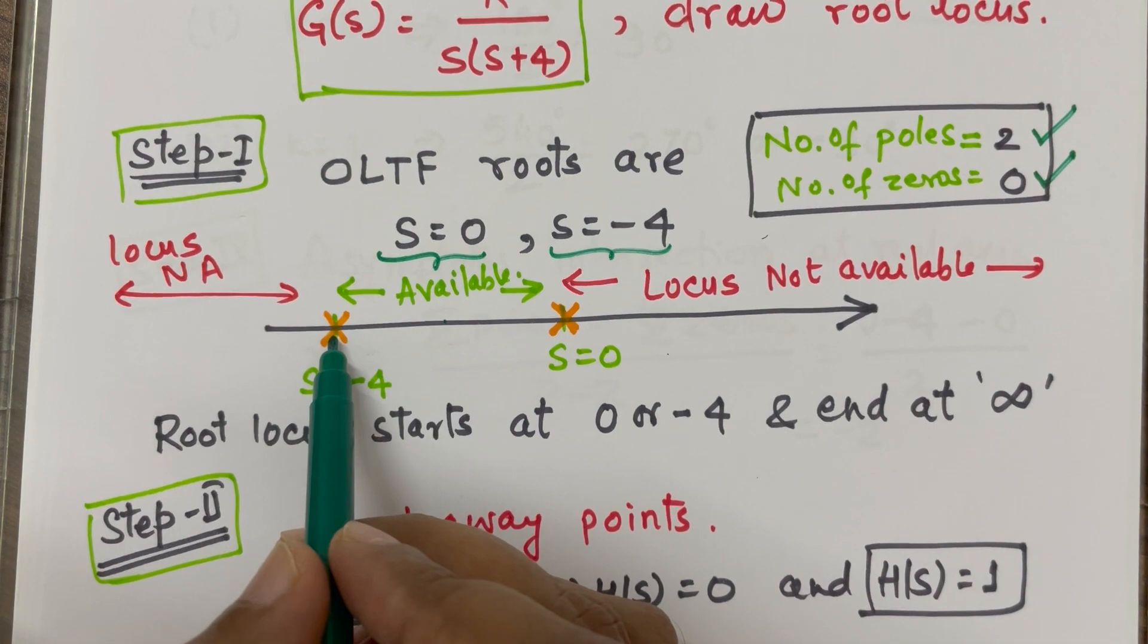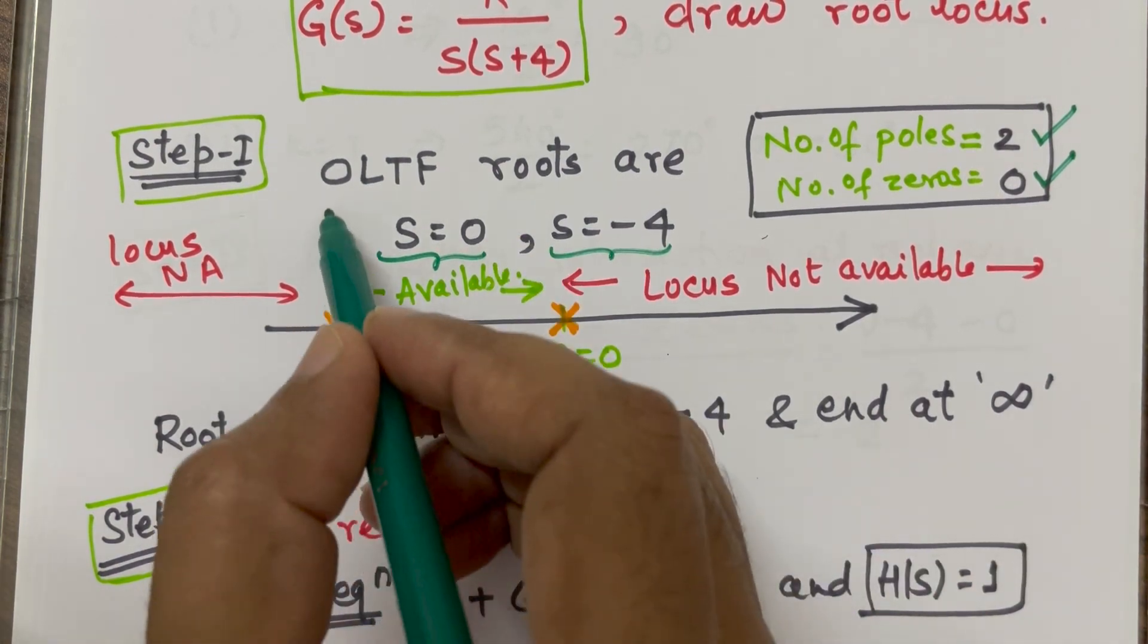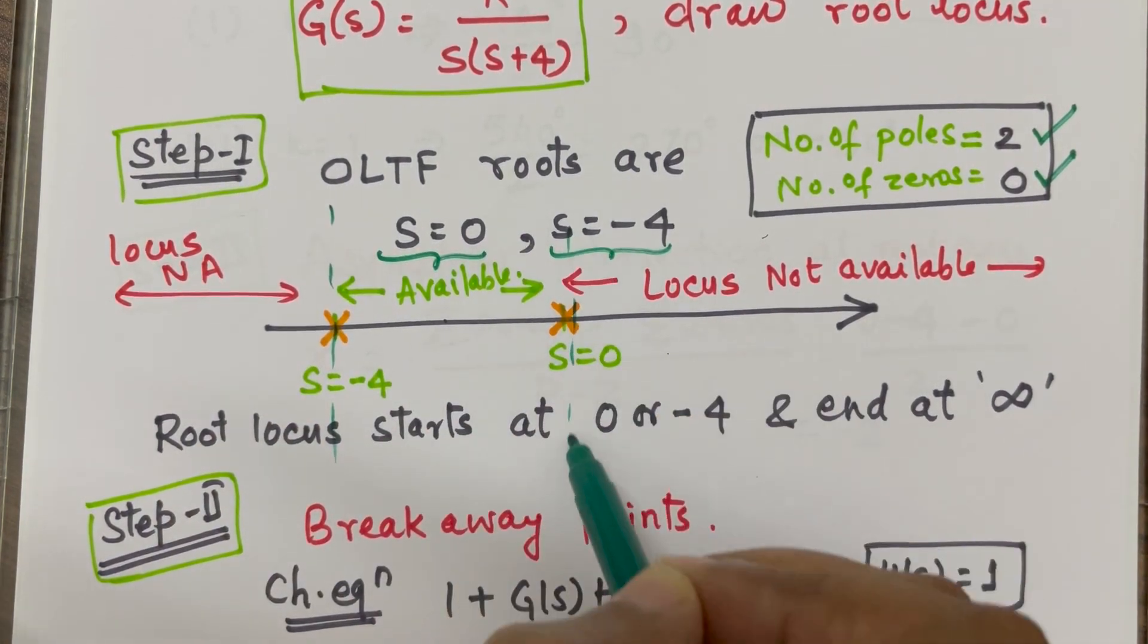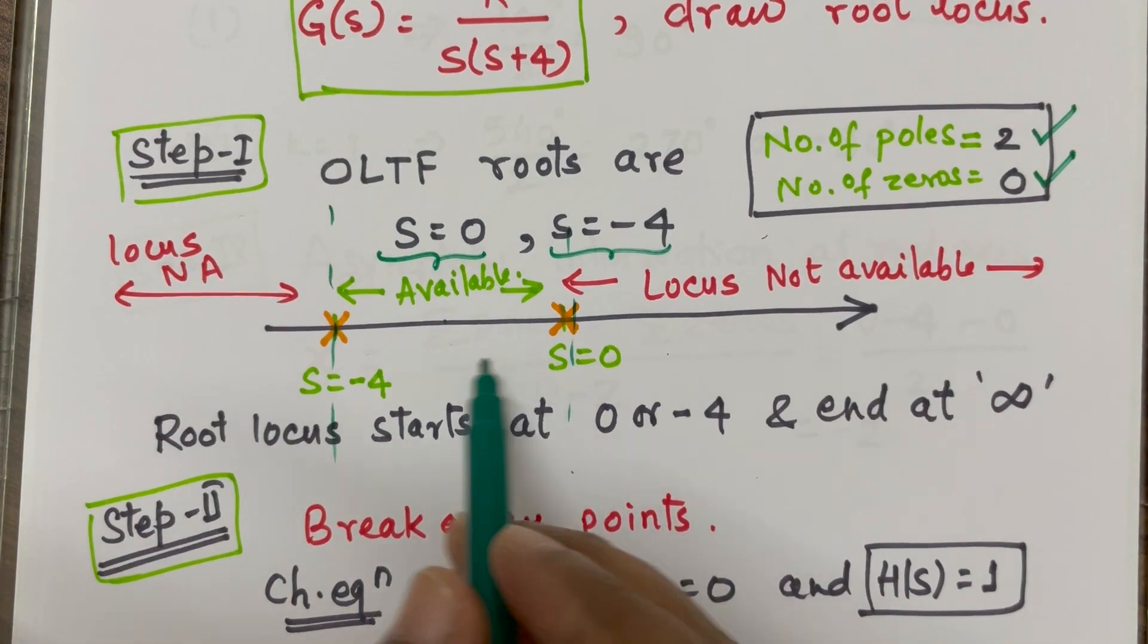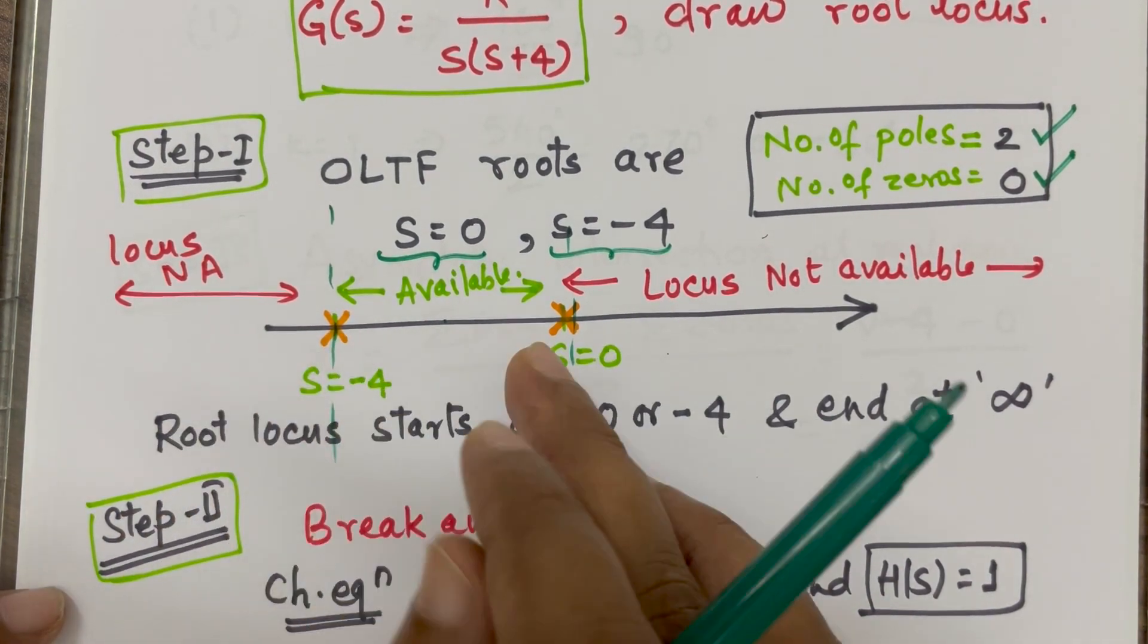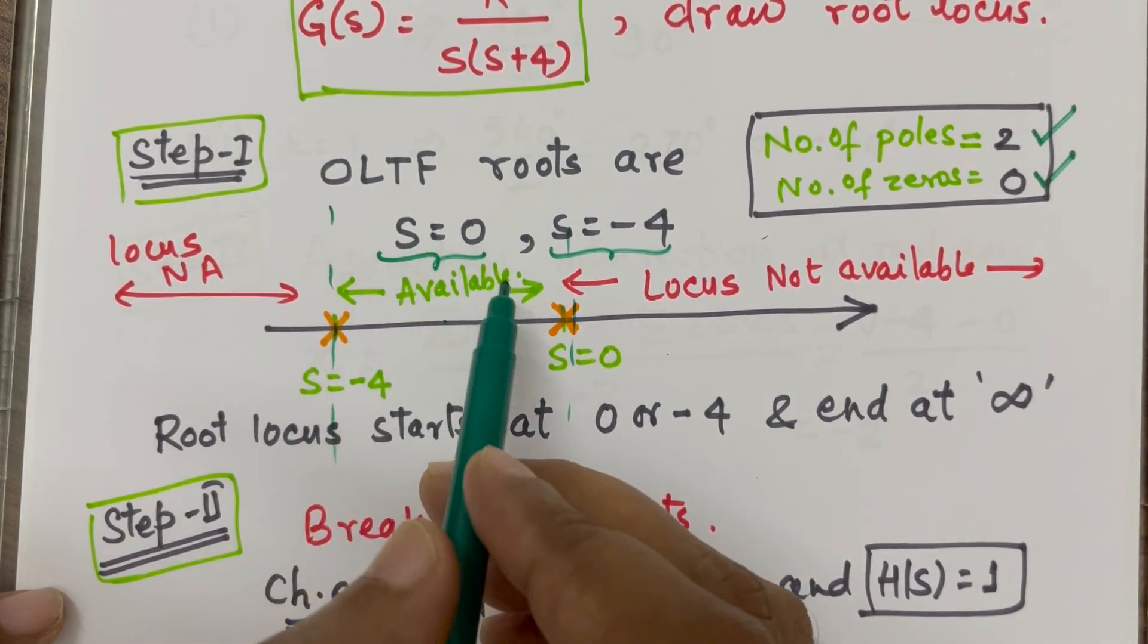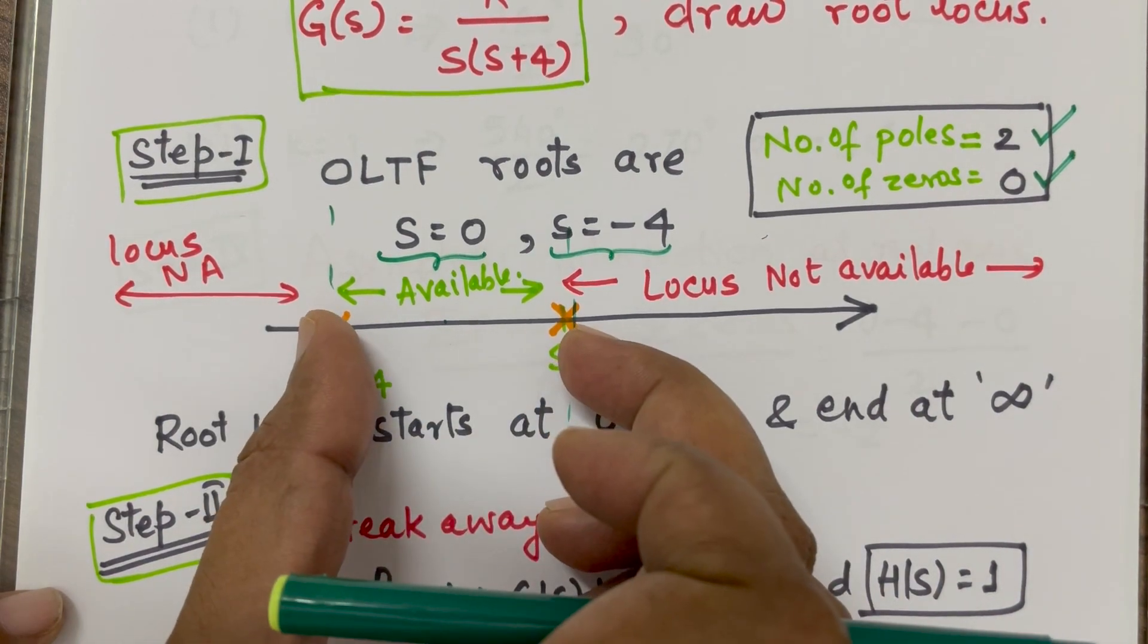So, my root locus will be only available between these two regions. That means, between 0 to minus 4. So, we have got some data, roots and where will be the root locus available.